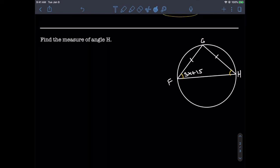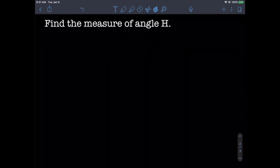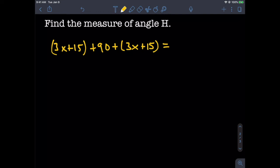When we solve for x and make our equation, what we plug in for H is the same as F: 3x + 15. We have the 90-degree angle because our triangle is inscribed in a circle with one side as the diameter, and we set it equal to 180 because that's the sum of interior angles in any triangle. Getting rid of parentheses, we combine like terms: 3x + 3x = 6x, and 15 + 90 + 15 = 120, so 6x + 120 = 180.